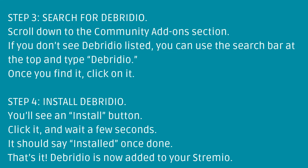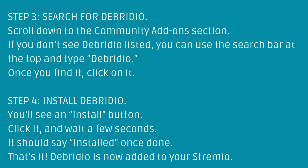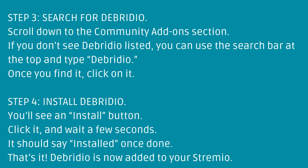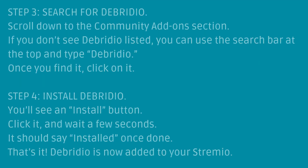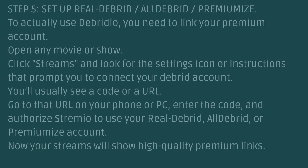Step 4: Install Debritio. You'll see an Install button. Click it and wait a few seconds. It should say Installed once done. That's it — Debritio is now added to your Streamio.